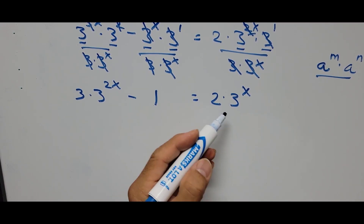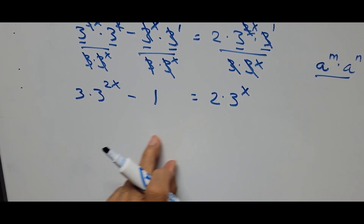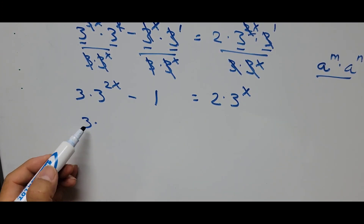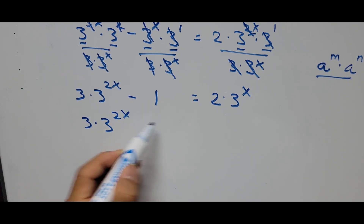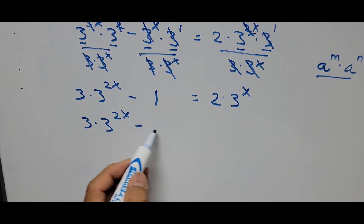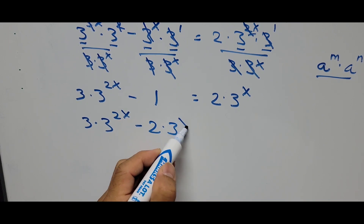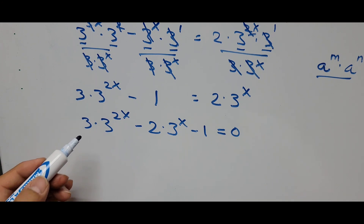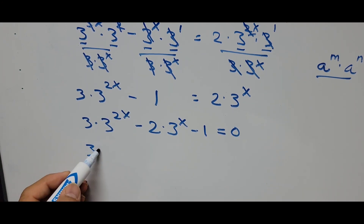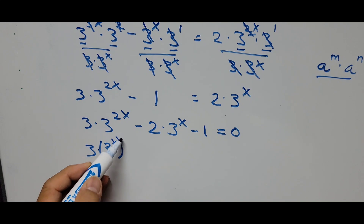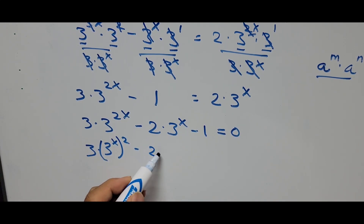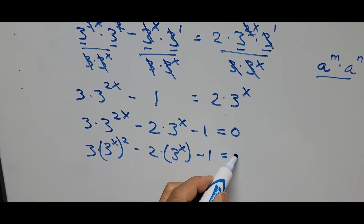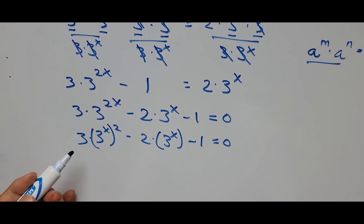Now rearranging by moving all terms to the left, the equation becomes: 3 times 3 to the power 2x, minus 2 times 3 to the power x, minus 1 equals 0. This can be written as: 3 times (3 to the power x) squared, minus 2 times 3 to the power x, minus 1 equals 0. The equation is now transformed into a quadratic equation.